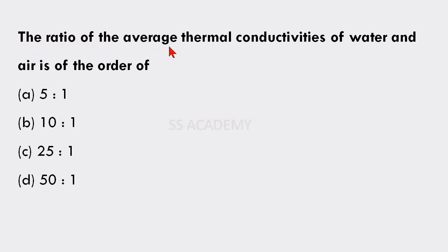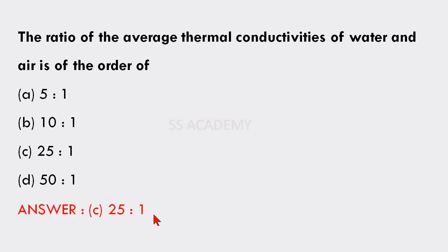The ratio of the average thermal conductivities of water and air is of the order of: 5:1, 10:1, 25:1, or 50:1. The answer is 25:1. The ratio of the average thermal conductivities of water and air is of the order of 25:1.